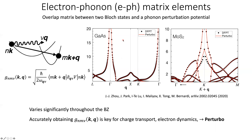The electron-phonon matrix elements vary significantly throughout the Brillouin zone. Near the gamma point they reach very large values, while for other points they are relatively smaller, both for gallium arsenide and MoS2. For a specific q-point there are multiple values of g depending on the phonon mode ν. Accurately obtaining these g's is the key for charge transport and electron dynamics analysis, and this is done accurately using Perturbo.